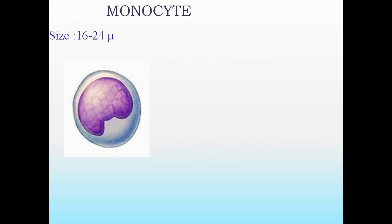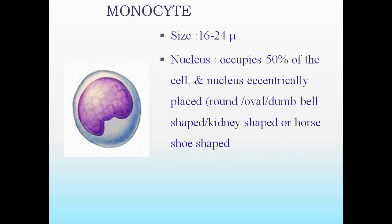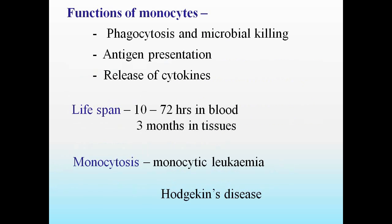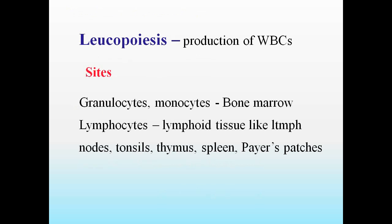The monocyte has a size of about 16 to 20 microns. The nucleus occupies 50 percent of the cell and is eccentrically placed, kidney-shaped or horseshoe-shaped. Cytoplasm shows a ground glass appearance — hazy and sometimes turbid. Functions include phagocytosis and microbial killing, antigen presentation, and release of cytokines. Lifespan is up to 72 hours in blood and 3 months in tissues. Increase in monocytes is seen in monocytic leukemia or Hodgkin's disease.